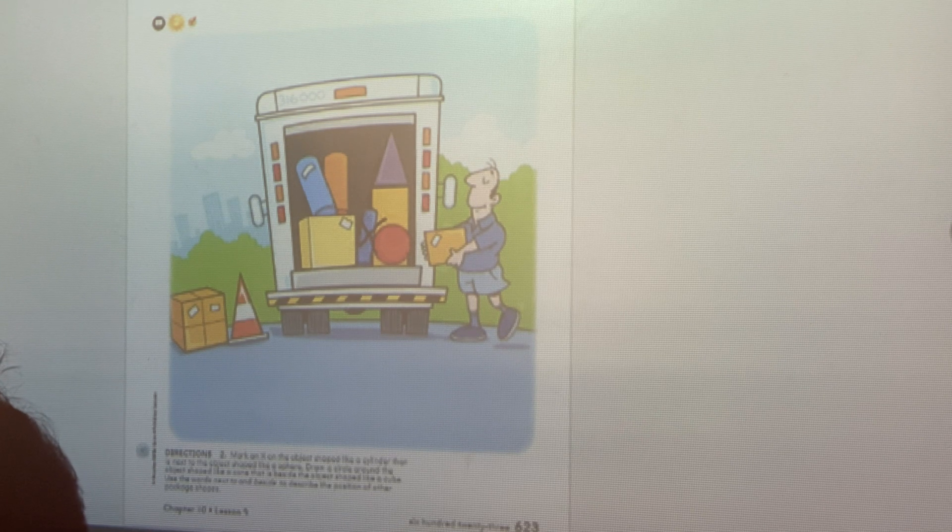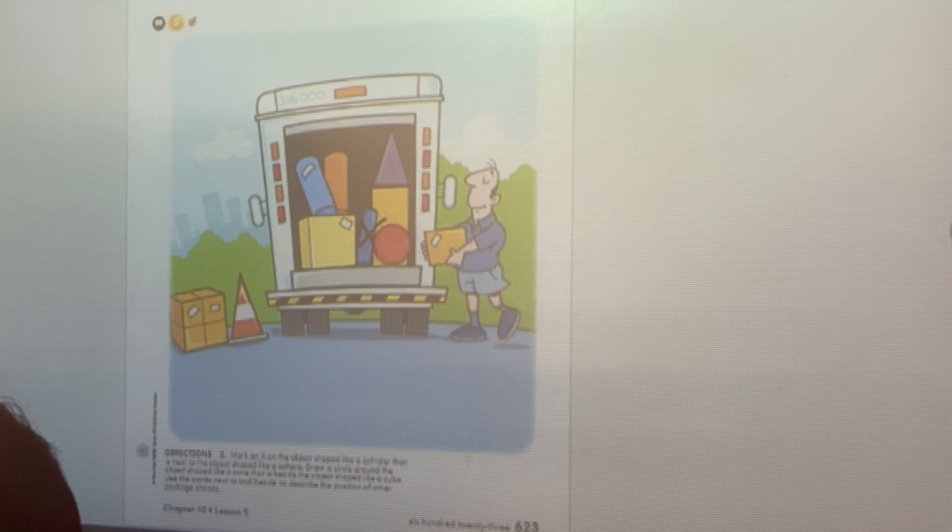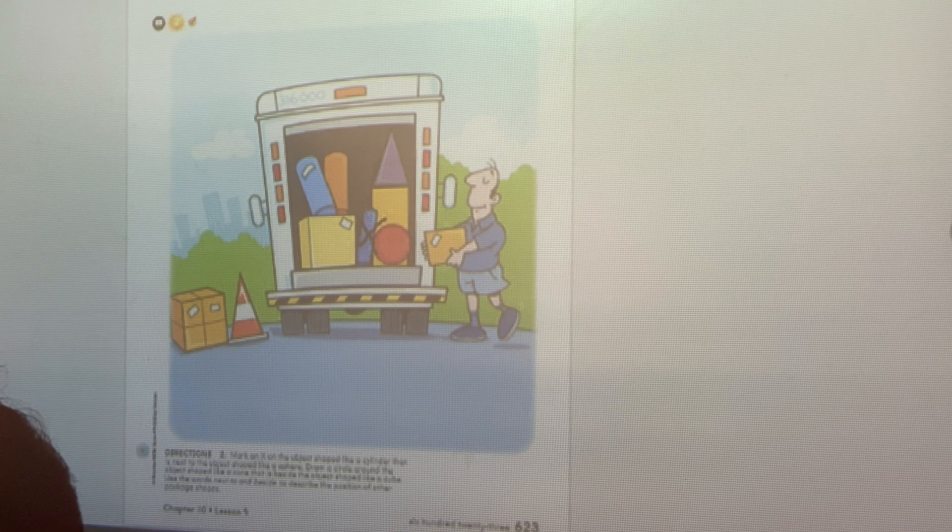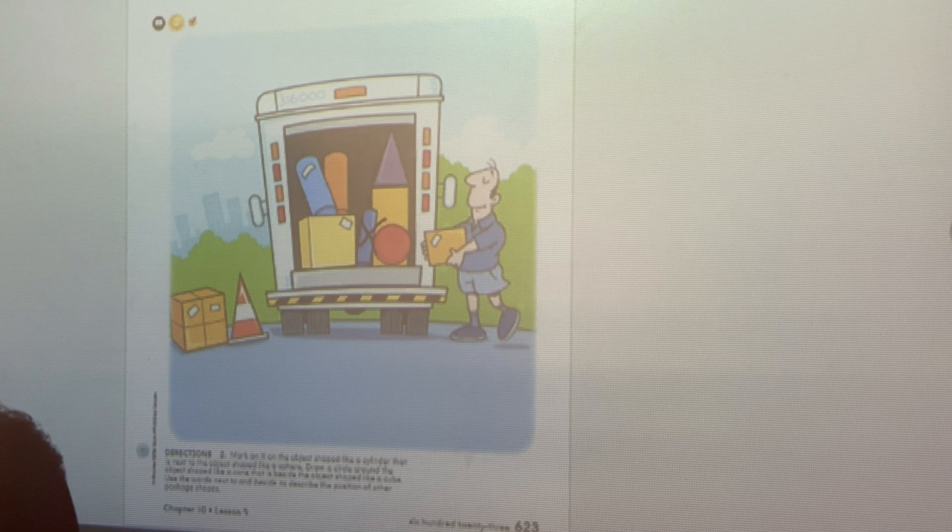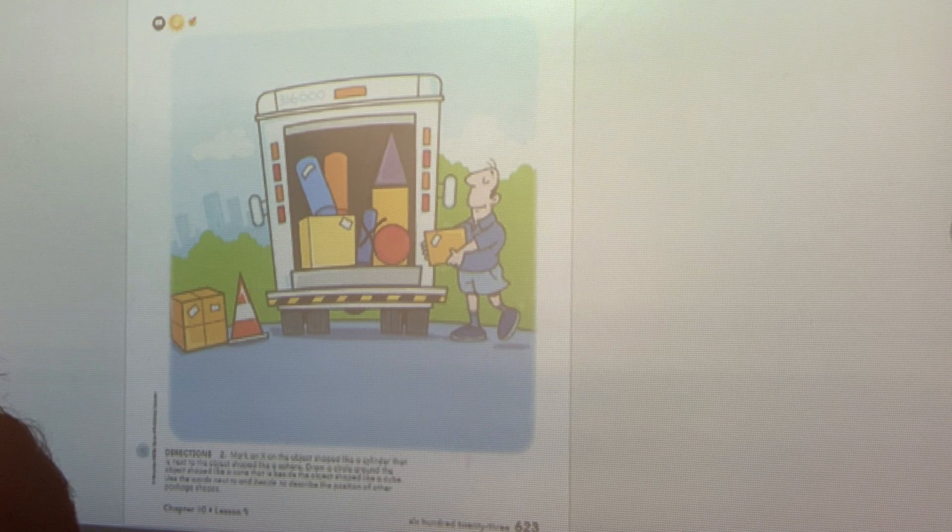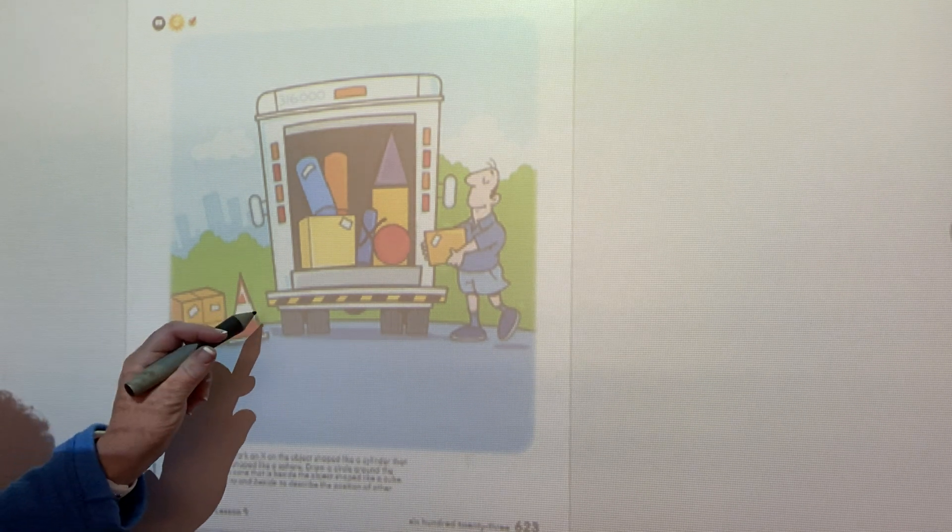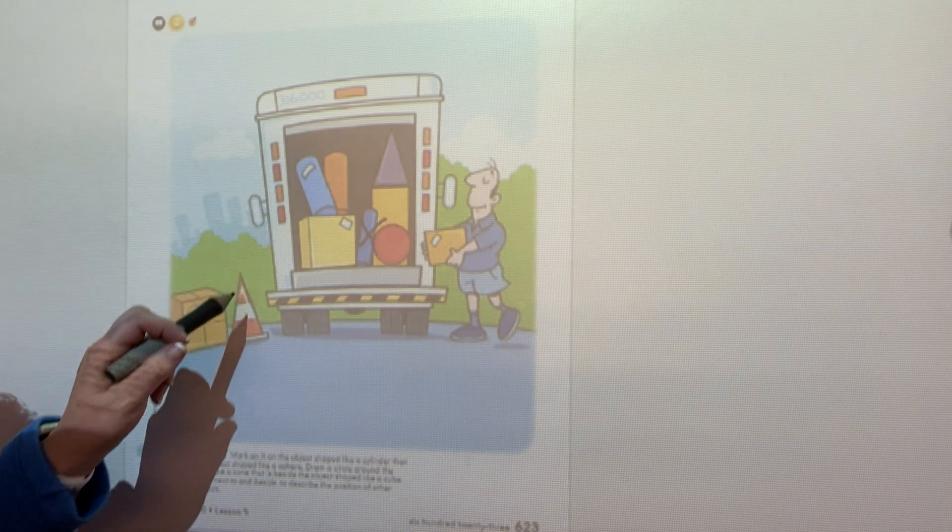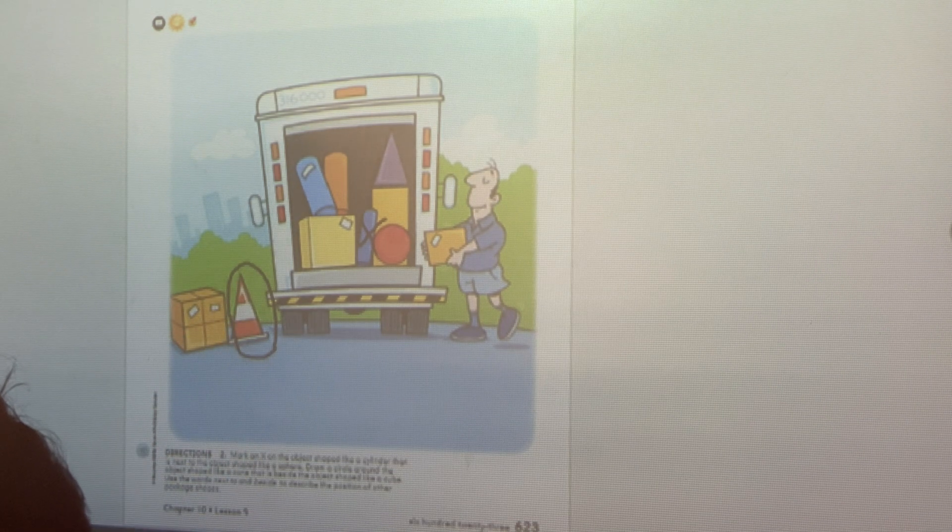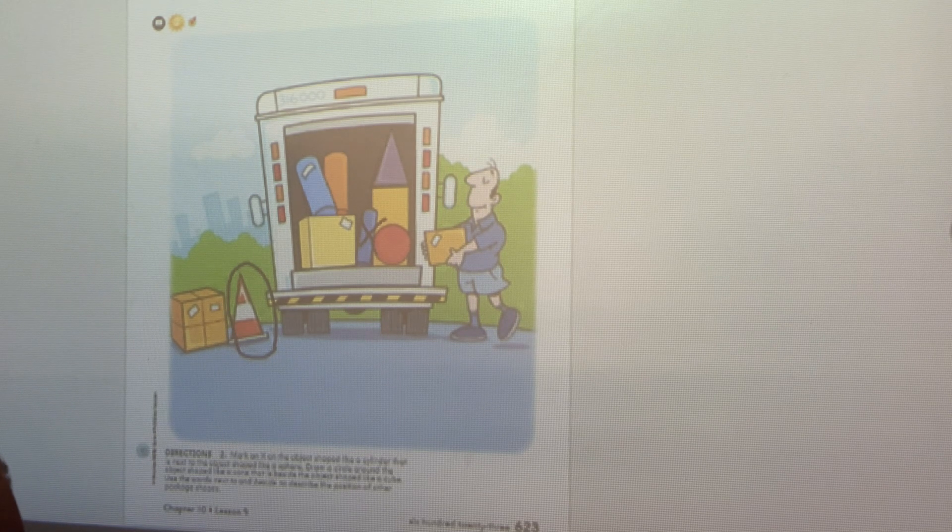I would like you to draw a circle around the object shaped like a cone. So we're going to draw a circle around an object shaped like a cone that is beside the object shaped like a cube. So where is there a cone beside a cube? It actually is going to be right outside here. I hope you saw that out the back of the truck. So we will go ahead and circle that cone because it is beside the cube.